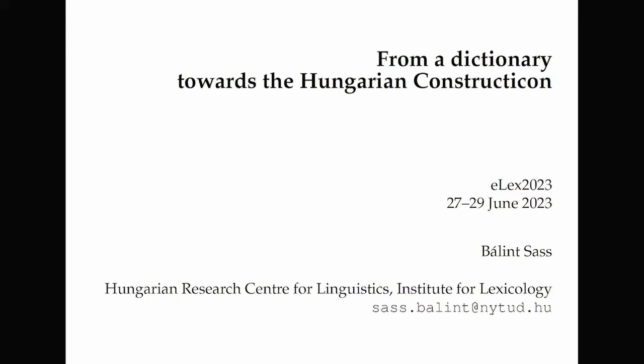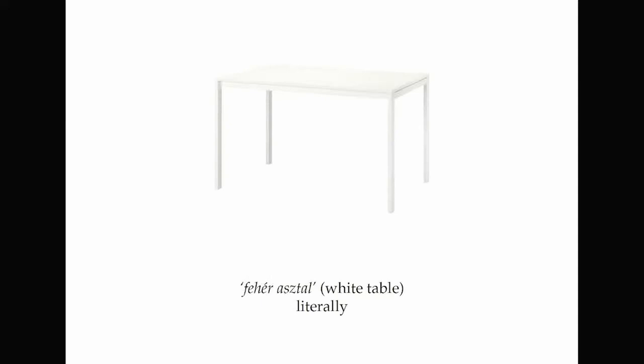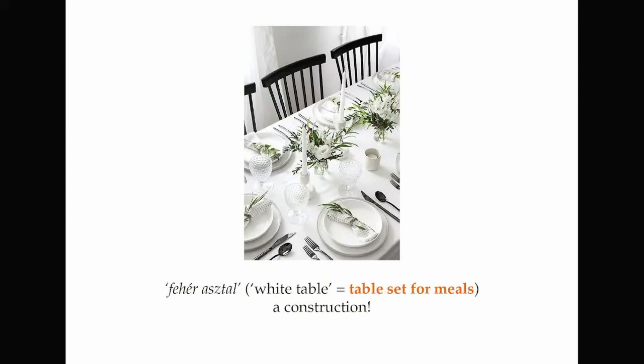First, please become familiar with some Hungarian words which I will refer to throughout this talk. "Asztal" — this is asztal. So "fehér" — and you can imagine the third one: "fehér asztal," white table. If we take it literally in Hungarian, but idiomatically, "fehér asztal" means a table set for meals. So this is an idiomatic meaning; this is a simple construction whose meaning can't be derived from its parts.